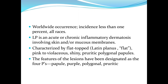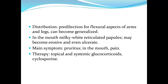Lichen planus is characterized by flat-topped — 'planus' is Latin for flat — pink to violet, shiny, pruritic, polygonal papules. The features of the lesions have been designated as the four P's: purple, polygonal, pruritic papules.